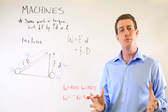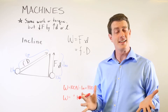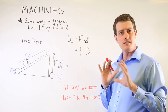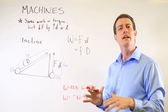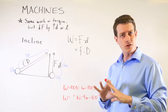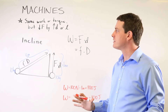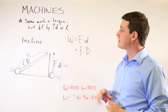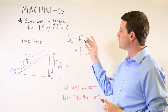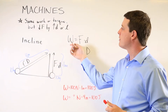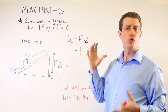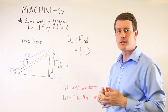The first type of machine we'll be going over is the incline, which is a very simple one that can help illustrate how machines operate. Remember that with machines we're trying to get the same amount of work, but we're going to trade force for distance.